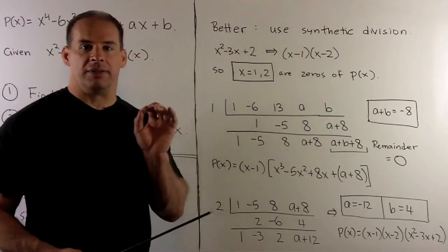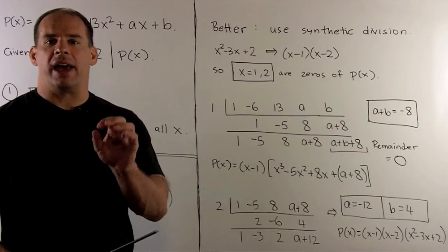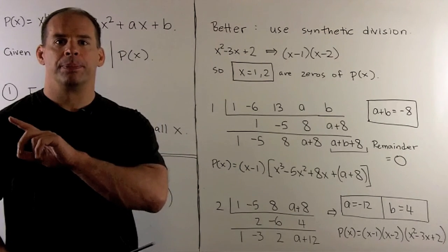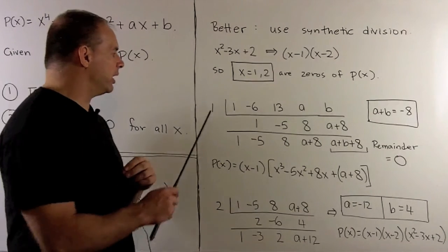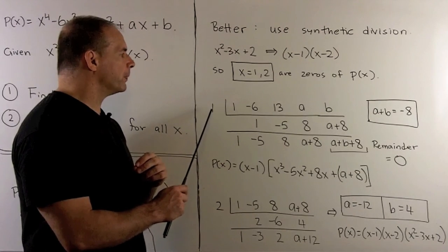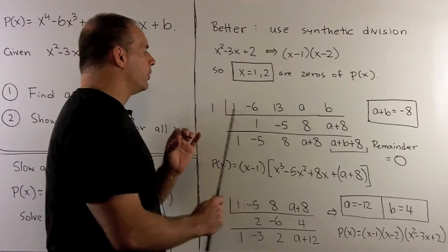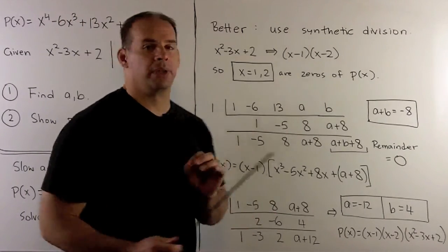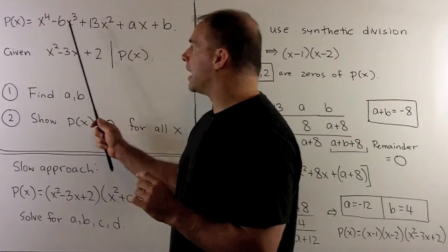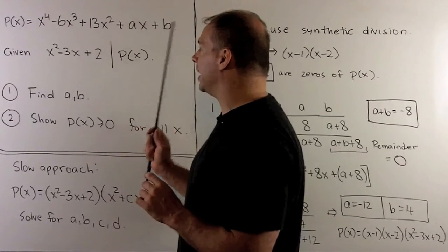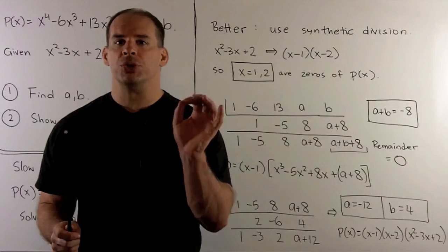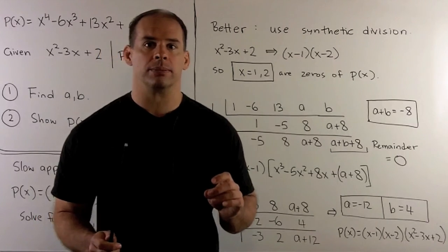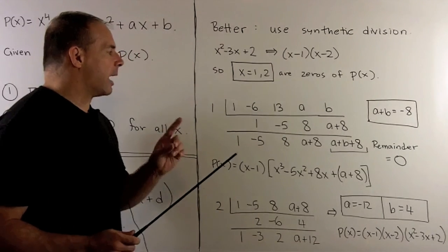Now, recall how we use synthetic division. We're going to divide X minus 1 into P of X. It's always going to be X minus C. The C we put here, so that's going to be a 1. In this top line, we're going to load in the coefficients of P of X. So I'll have 1 minus 6, 13, A, and B. And if we were missing any powers of X there, we would just use 0 for the coefficient.